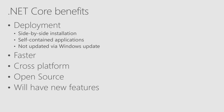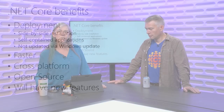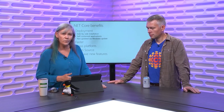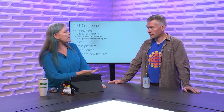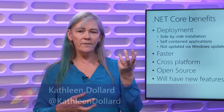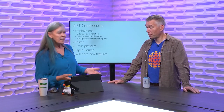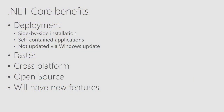Before we talk about pain points, let's start with why do it in the first place — what's good about .NET Core? Some of the benefits: side-by-side installation of the runtime means you can have two applications on the same VM or machine, each running their own copy of the runtime, and they don't interfere with one another. It's also faster, cross-platform, open source, and will be getting new features while .NET Framework is now stabilized.